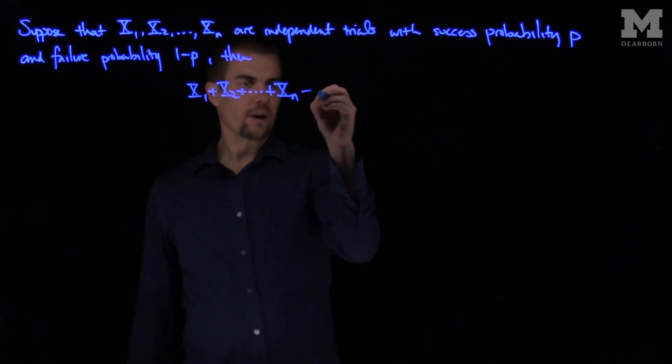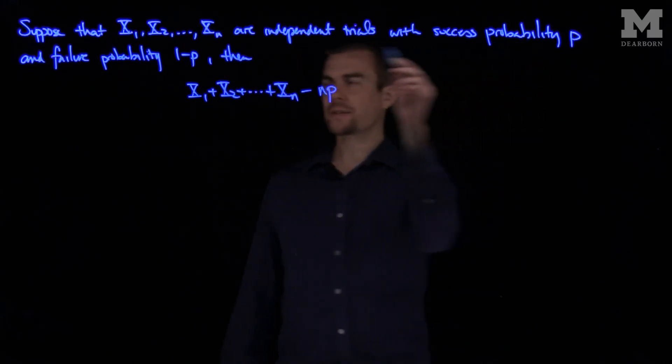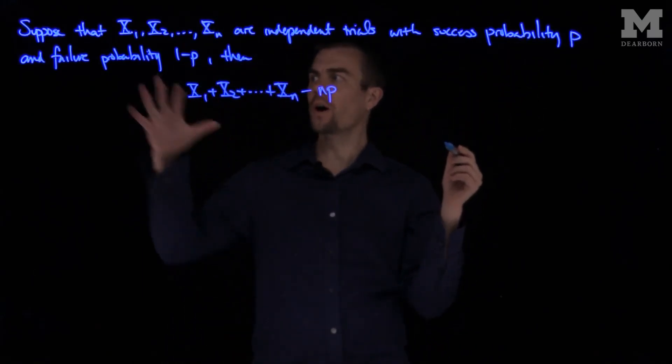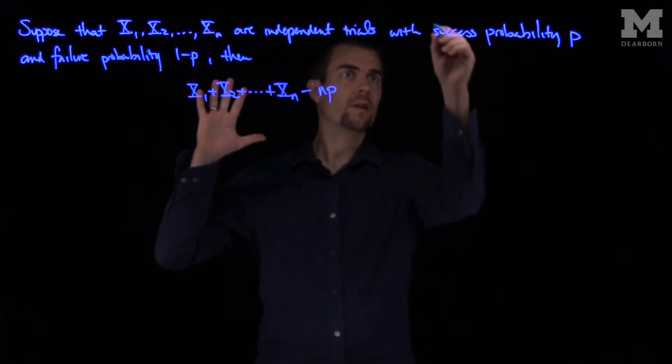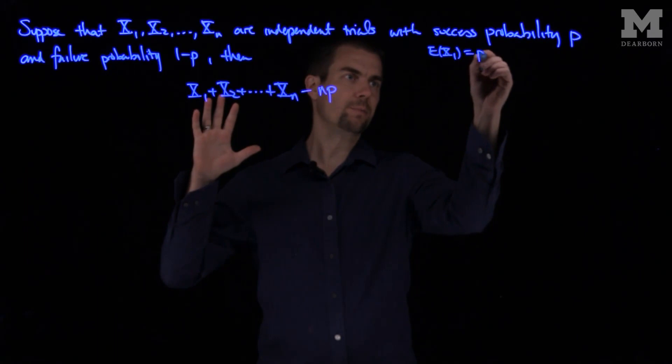If I subtract off n times p, because if the probability of success is p and failure is 1 minus p, if we consider success as being a 1 and failure as being a 0, then the expected value of any one of these random variables will simply just be p.